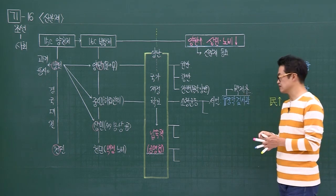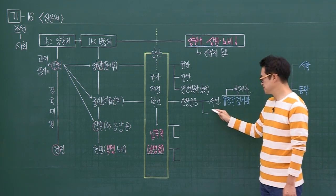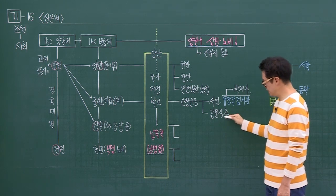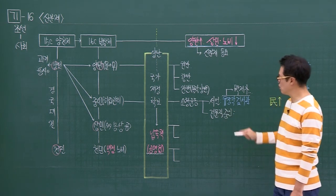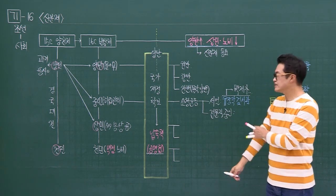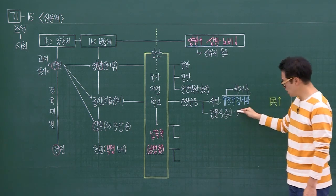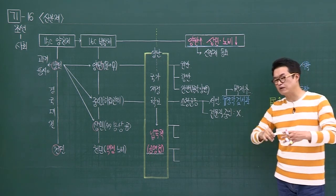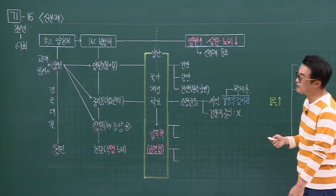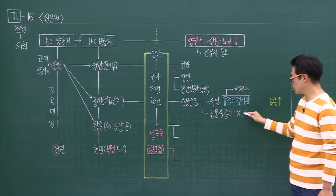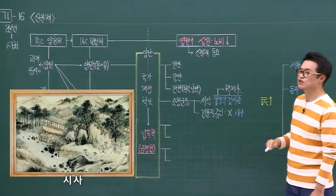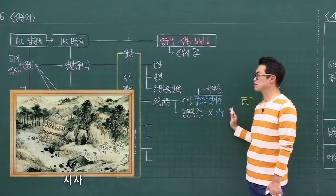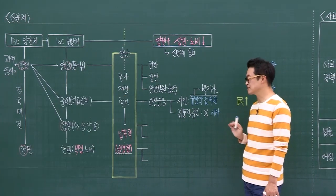전통적인 전문직 중인들도 소청운동을 해요. 성공하지는 못하지만 양반 나름의 어떤 모습들을 보이려고 해요. 우리도 양반들처럼 시도 짓고 글도 쓰고 그러자라고 해서 만든 조직이 시사입니다. 동아리예요. 이런 시사라는 조직을 만들어 가지고 양반 흉내를 내는 거죠. 그런 모습들이 나타나고 있더라는 거 기억하시면 되겠습니다.